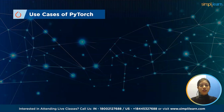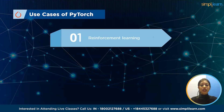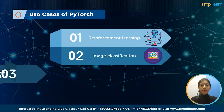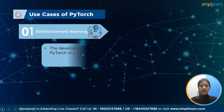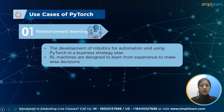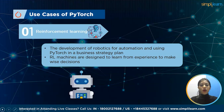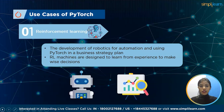Let's have a look at the use cases of PyTorch. The PyTorch framework is well-known for being convenient and adaptable, with typical use cases including reinforcement learning, image classification, and natural language processing. For reinforcement learning, PyTorch is used in robotics for automation and in business strategy to benefit from its quick and flexible experimentation capabilities. With powerful GPU acceleration, PyTorch makes dynamic neural networks available, and RL machines are designed to learn from experience to make wise decisions and obtain the best rewards.